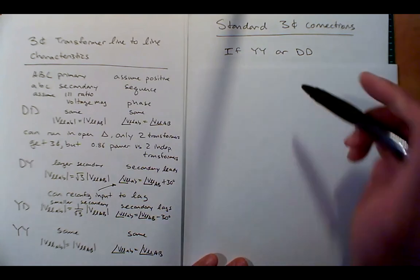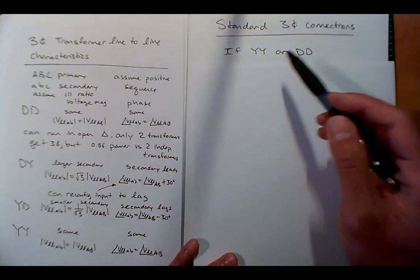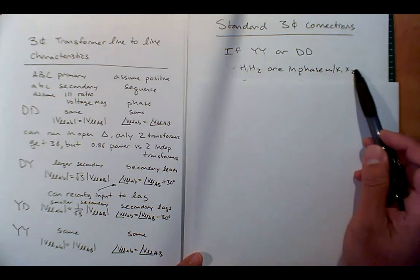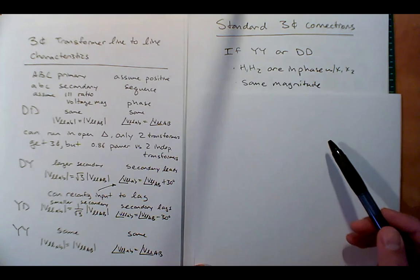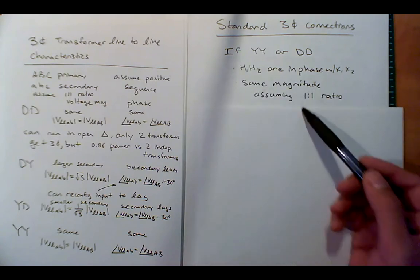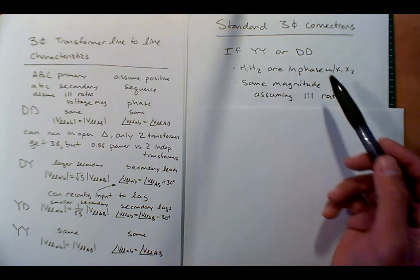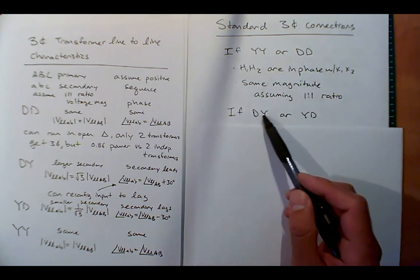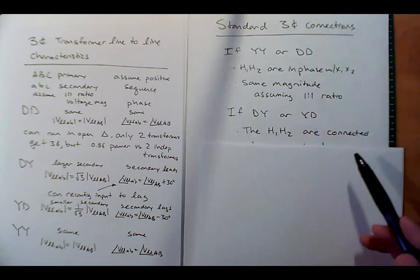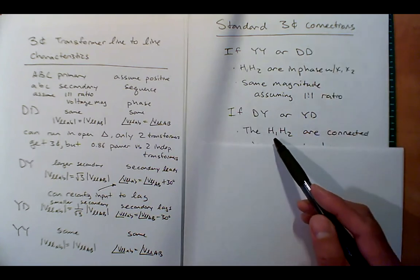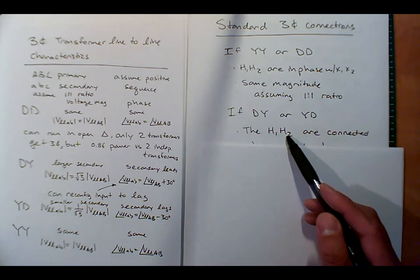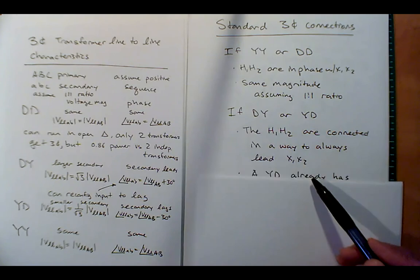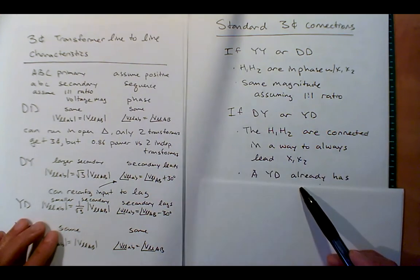Now, in standard three-phase connections, if you have Y-Y or delta-delta, the high side H's are in phase with the low side X's — same magnitude assuming a one-to-one ratio. With a non-unity ratio they'll have different magnitudes, but no phase issues. In industry, for delta-Y or Y-delta connections, the H terminals are connected in such a way that H always leads X1 and X2.